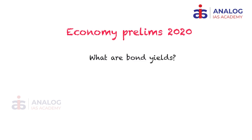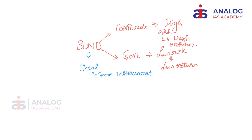Hello guys, welcome back to Analog Economics Prelims 2020 Special. The topic for today is bond yields. In the previous videos we have seen what is the difference between a bond and a share. Basically a bond is nothing but a fixed income instrument — it is nothing but a loan made by an investor to a borrower. For example, if the government or a corporate entity wants money, it will issue a paper called a bond and in return it will promise a certain amount of interest.